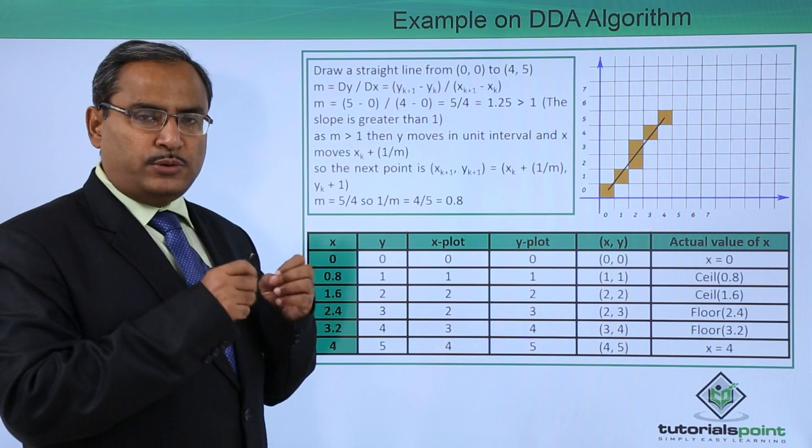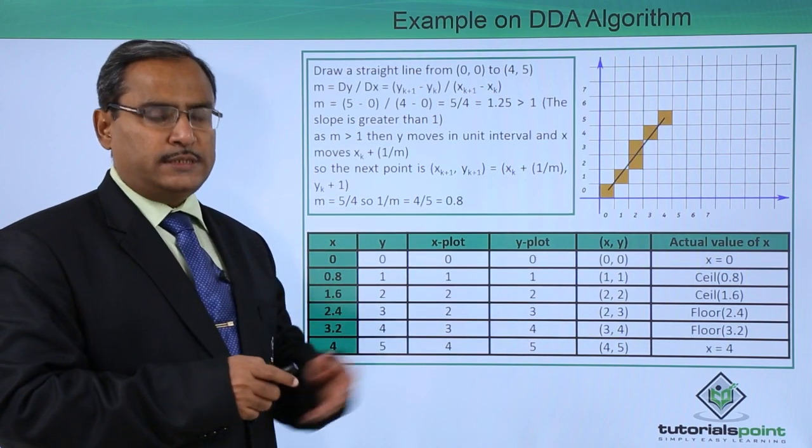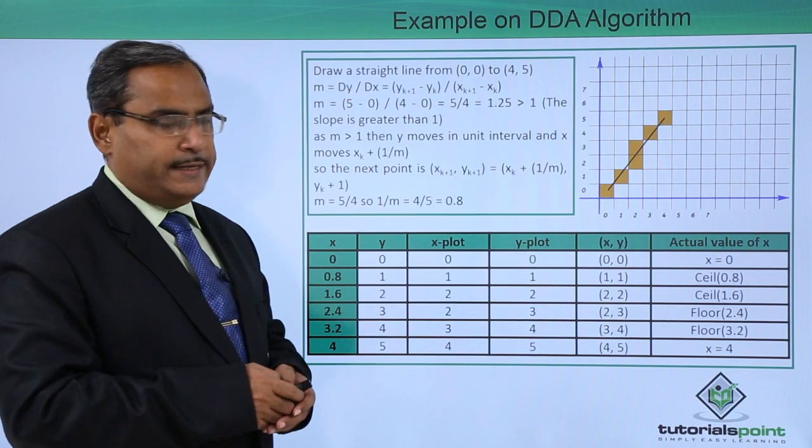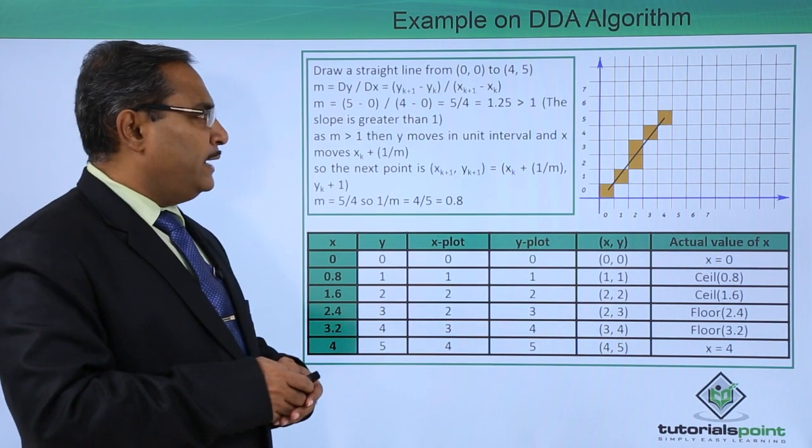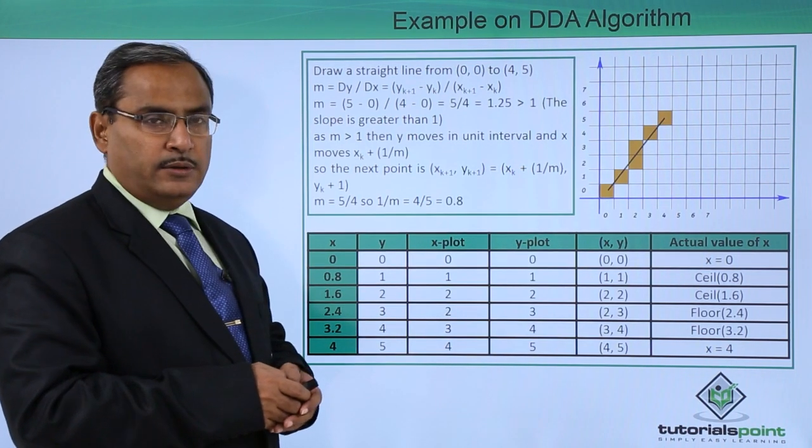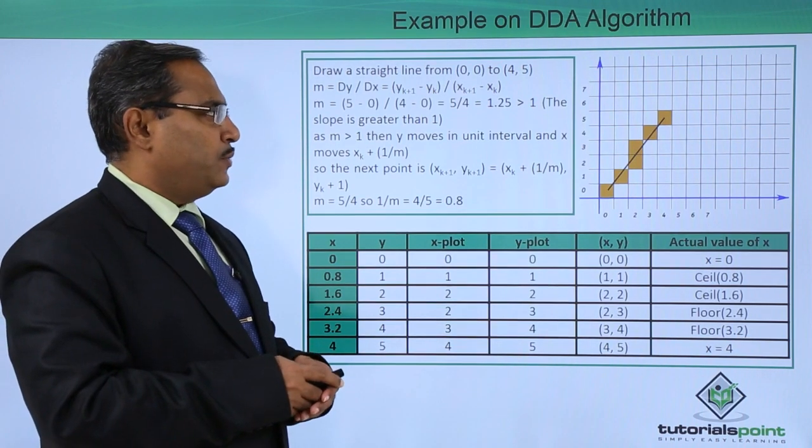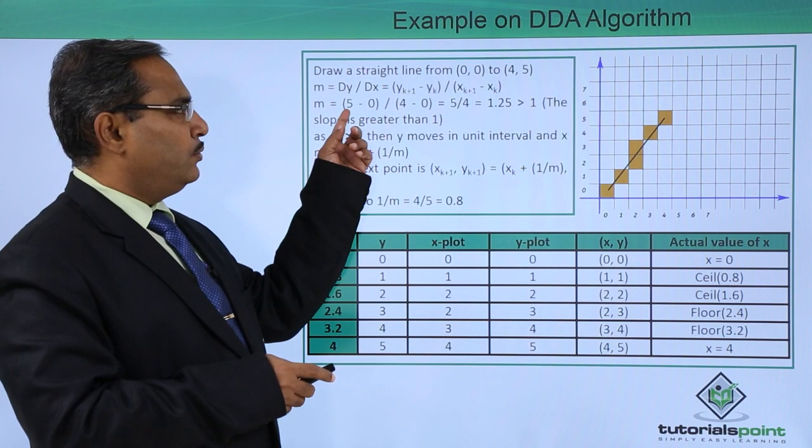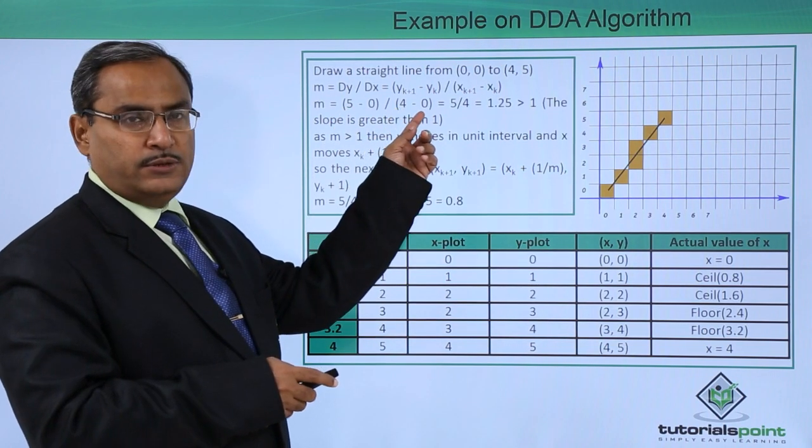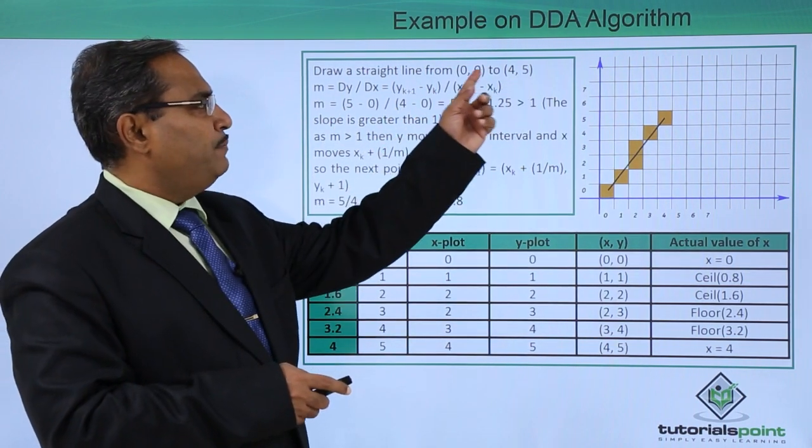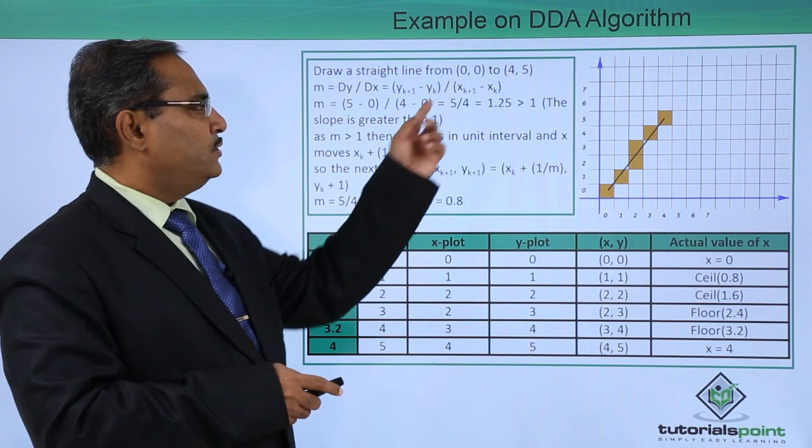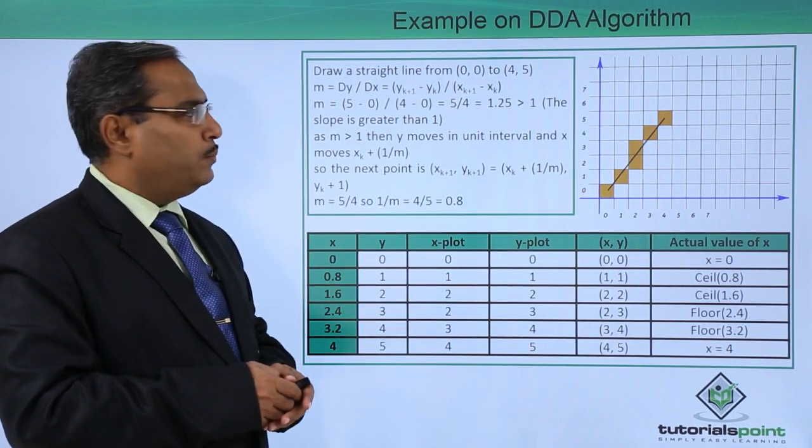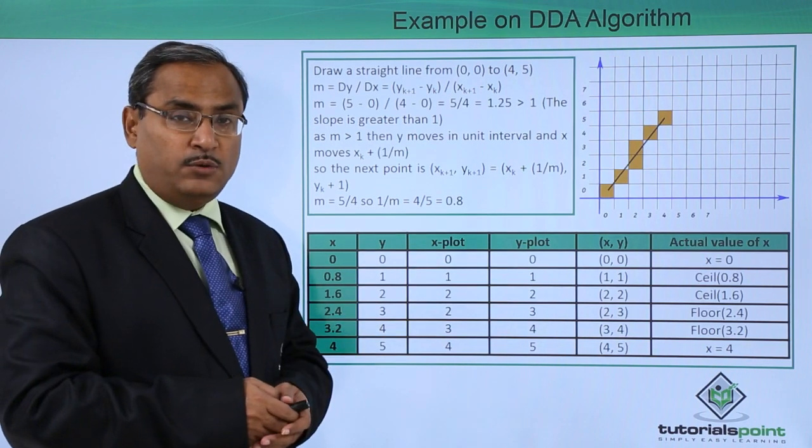At first, it is our common practice to calculate the slope, which we discussed in our previous video also. That is dy by dx, which is (y_k+1 - y_k) / (x_k+1 - x_k). Here we are having 5 minus 0 and 4 minus 0. We are having the value 5 by 4 that is 1.25 and which is greater than 1.